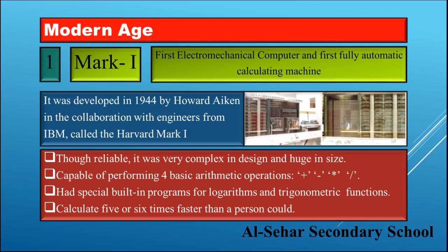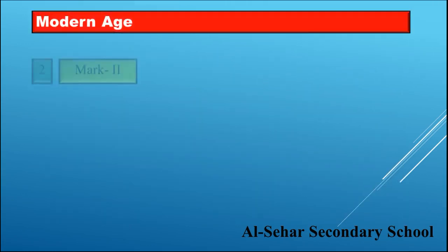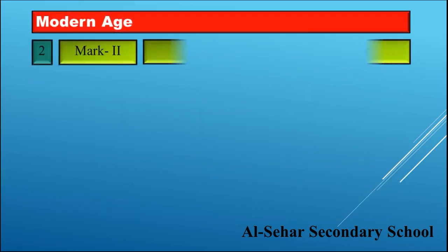Mark One was capable of performing four basic arithmetic operations: addition, subtraction, multiplication, and division. It had special built-in programs for logarithms and trigonometric functions. It could calculate five or six times faster than a person could.